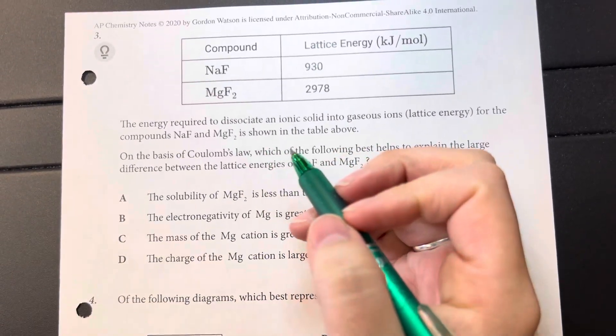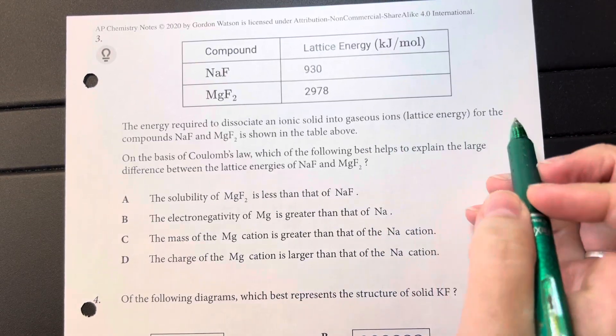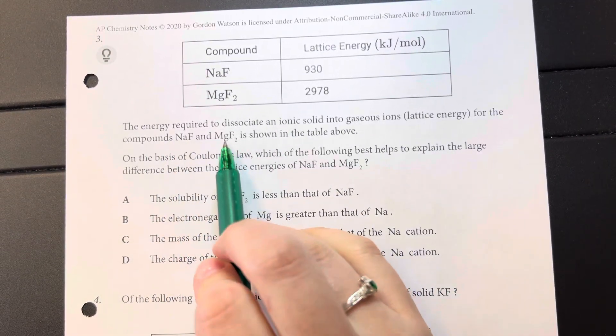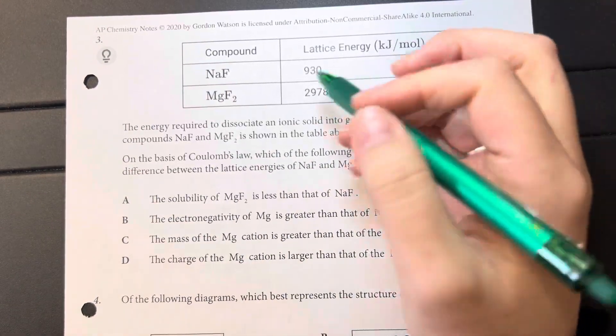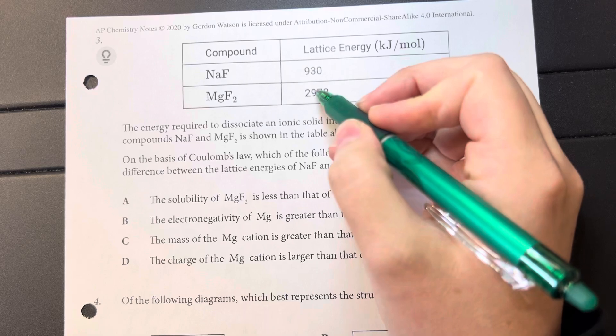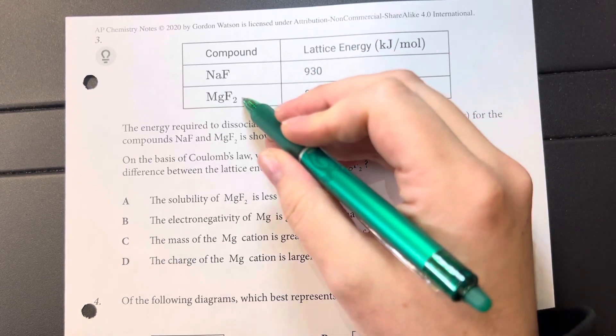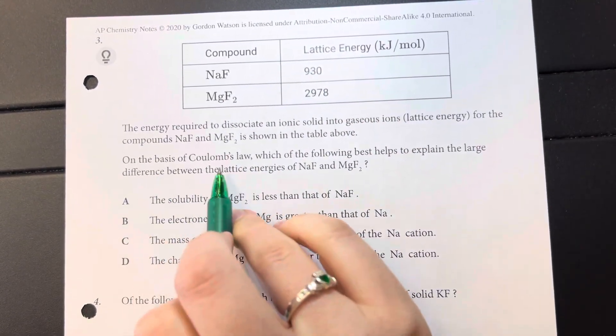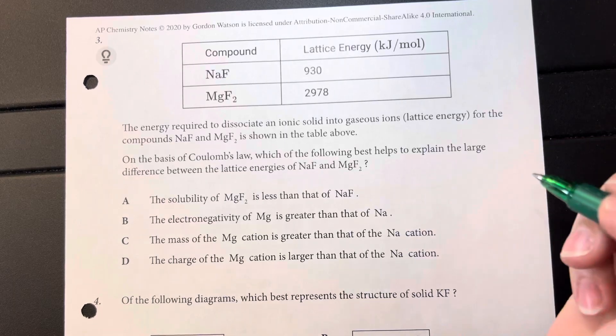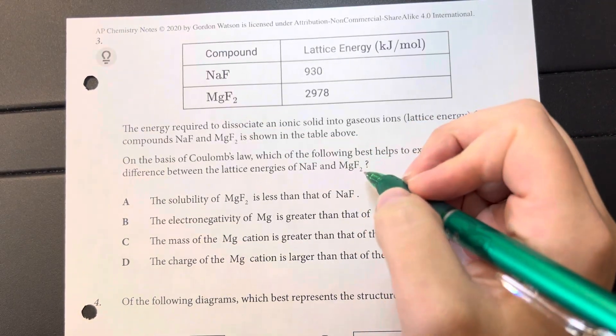The energy required to dissociate the ionic solids into gaseous state, also known as the lattice energy, for the compounds sodium fluoride and magnesium fluoride are shown in the table above. You can see that the magnesium fluoride is substantially higher in lattice energy, which means it takes a lot more energy to turn this solid into a gas. On the basis of Coulomb's Law, which of the following best explains the large differential between the lattice energies of sodium fluoride and magnesium fluoride?